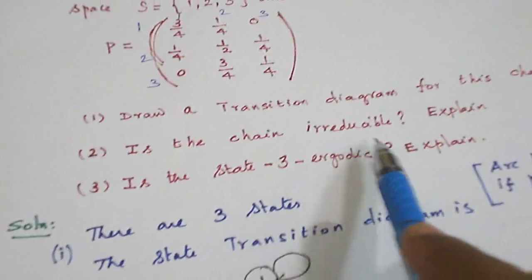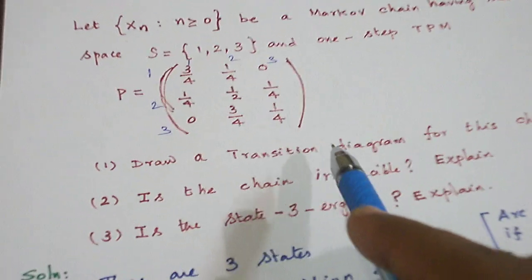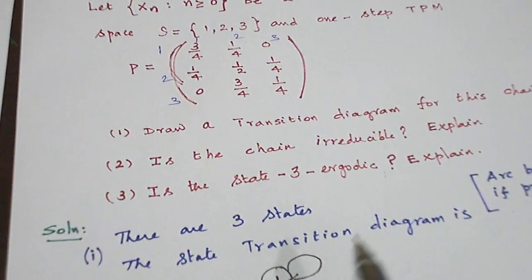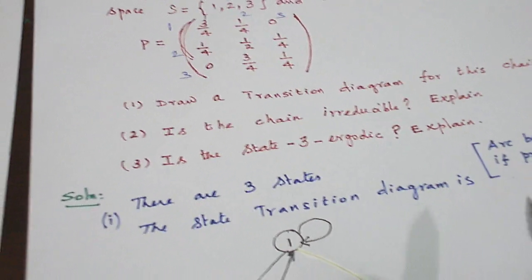Now is the chain irreducible? Look at that. Can we reach all the states from all other states?